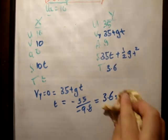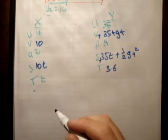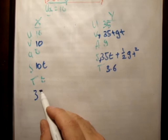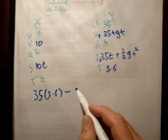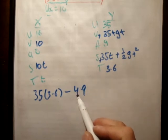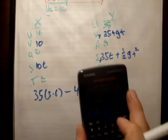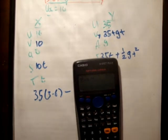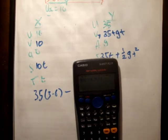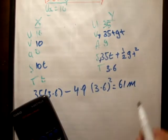Like that. And last, excuse me, we're asked to find the height. So just plug that 3.6 into s-sub-y. So it's 35 times 3.6 minus 4.9, which is 1 half g. And that's multiplied by t squared. Giving me a height of 61.3 meters.